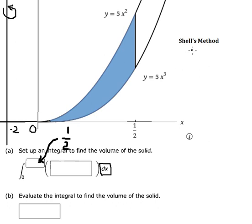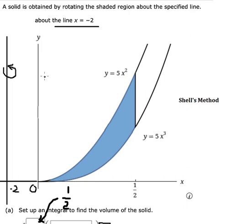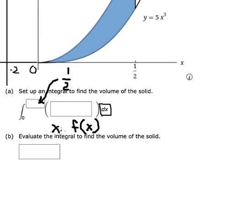About shell method we have s and the f of s, but in this one we don't rotate about this one. We just rotate this one that is about s equals to negative number two.